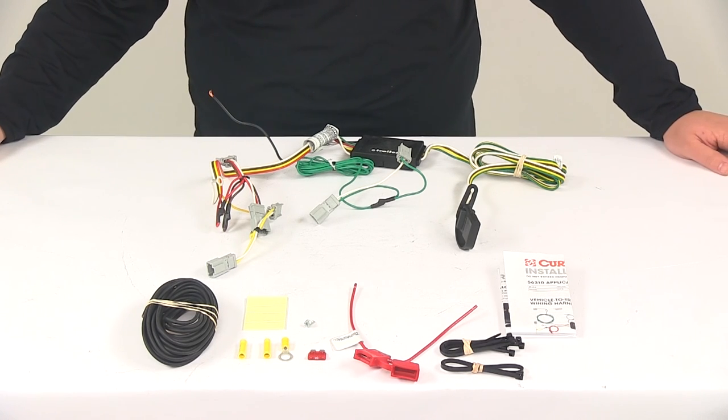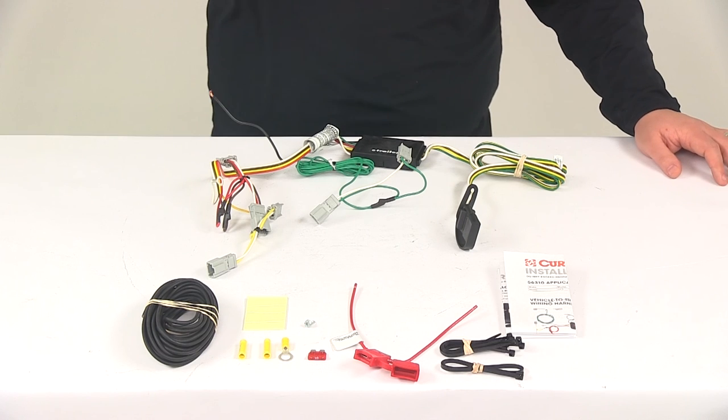That's going to do it for today's look at the CURT T-Connector Vehicle Wiring Harness with the four-pole flat trailer connector.